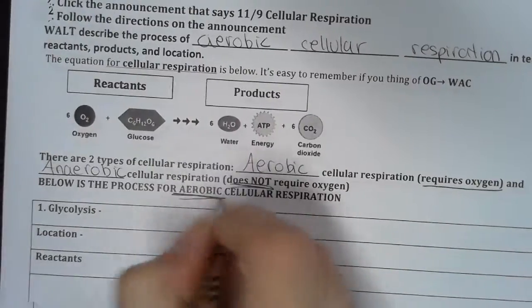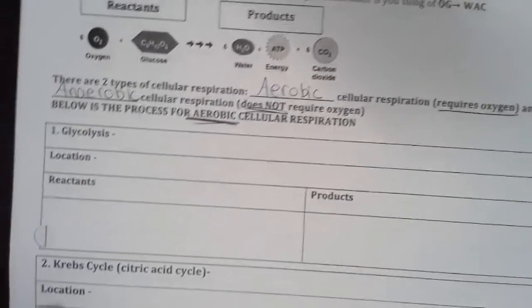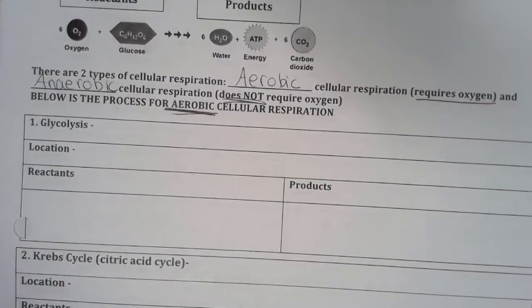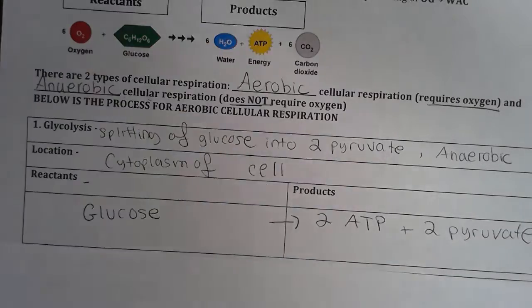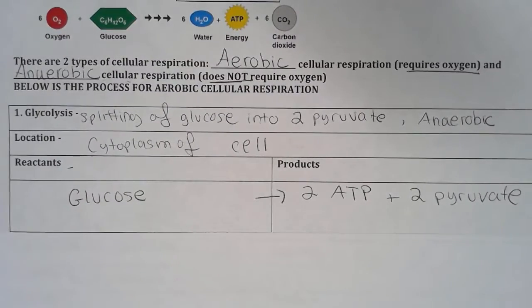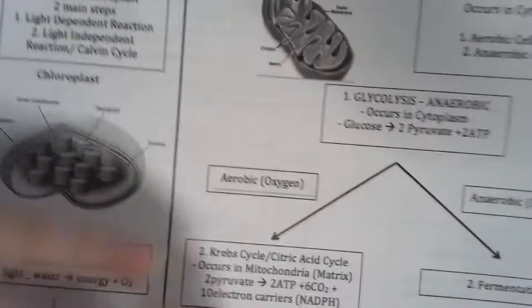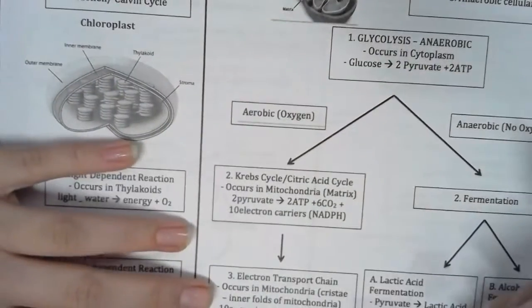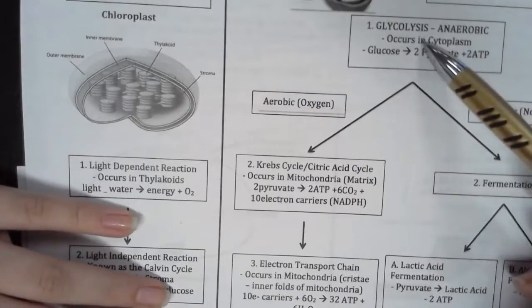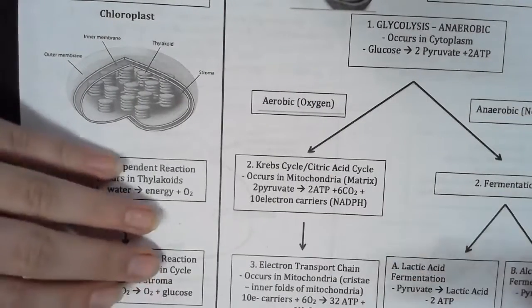Today we're going to be focusing on aerobic cellular respiration. I'm going to just put up some notes for you to copy for each section. Pause the video, copy it. I'm just going to sort of talk through what each of the sections mean. All right, so our first section is glycolysis. There are actually three steps in cellular respiration. You can see that on your cheat sheet. What we are focusing on today is going over this aerobic part, and there are three steps: glycolysis, Krebs cycle, and the electron transport chain.